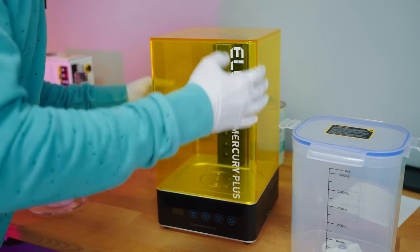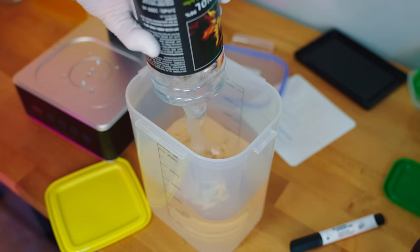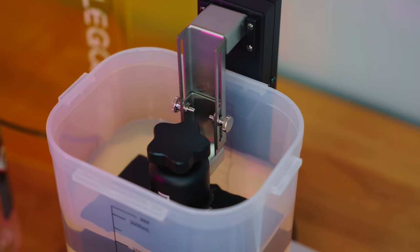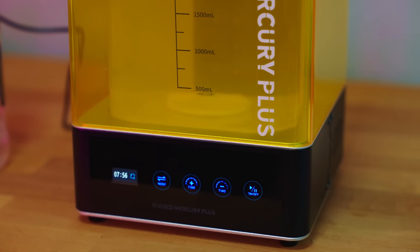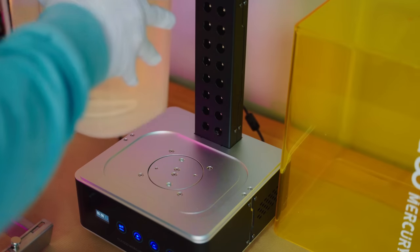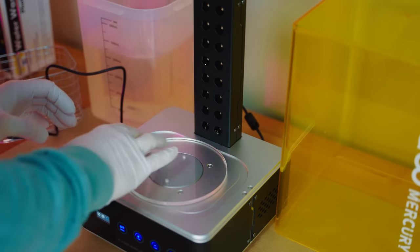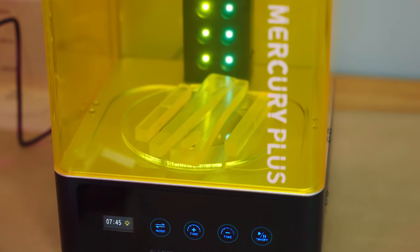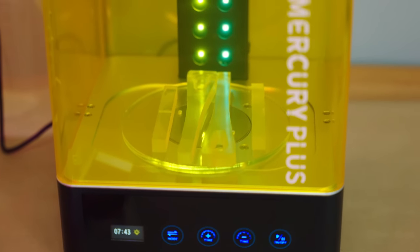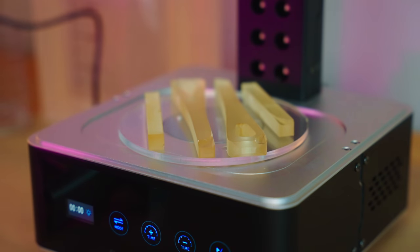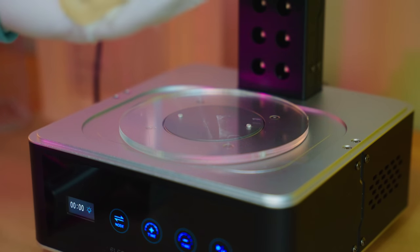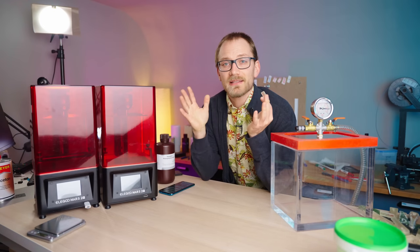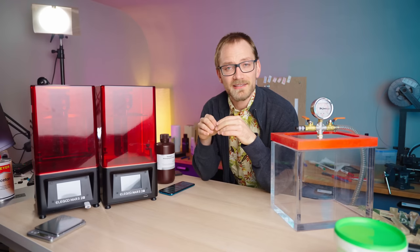Prints were done with the default print settings, which means a 3.5 second layer exposure time and 50 micron layers. After that, the prints were washed in the Elegoo Mercury Plus in a mix of ethanol and IPA. Typically you'd use IPA, but ethanol works just as well and it's a bit more commonly available. I washed these parts attached to the bed for 8 minutes and then did 4 minutes of curing on one side, flipped them over, and did another 4 minutes of curing after that. This is well on the higher side of the curing time; I just wanted to make sure that whatever additives I add into these materials, they're gonna get cured all the way through to the core, and I didn't want to change settings for different additives. After that, the parts were done and ready for testing.